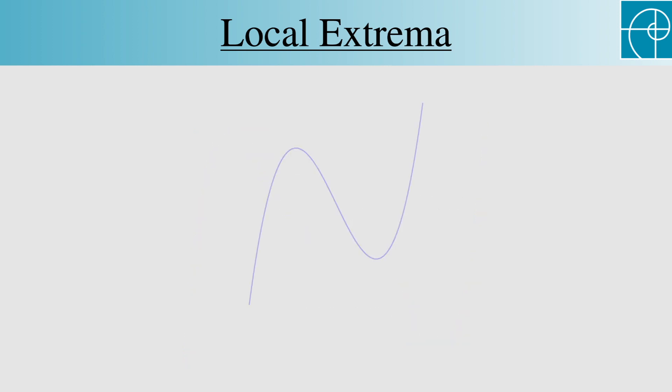So let's consider this graph that has only two horizontal tangent lines. This is what we just called a local maximum. So we have two words to explain: maximum and local. We're talking about a peak, so it's intuitively a maximum.